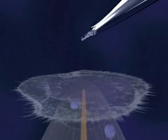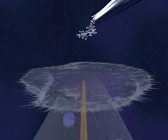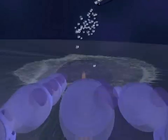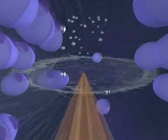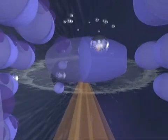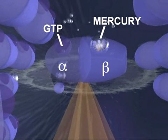When mercury ions are introduced into the culture medium, they infiltrate the cell and bind themselves to newly synthesized tubulin molecules. More specifically, the mercury ions attach themselves to the binding site reserved for guanosine triphosphate, or GTP, on the beta subunit of the affected tubulin molecules.